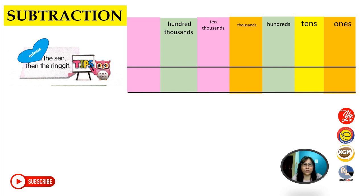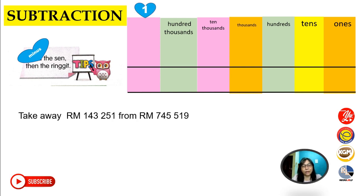Now we're going to learn subtraction in money. The same method applies — you're going to subtract ringgit from ringgit and sen from sen. When you write, you go according to place value, starting from ones. We need to start from the right to avoid writing the value wrongly. If you have ringgit and sen, align by the decimal point; if not, align by place value.